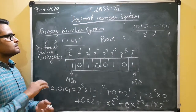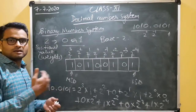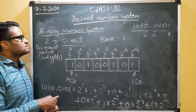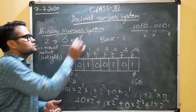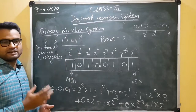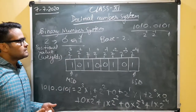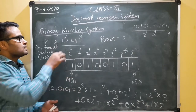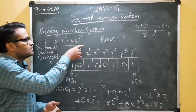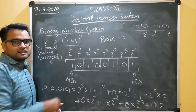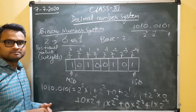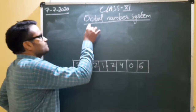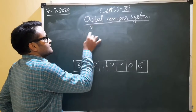Binary is the number system generally used by most computers because it is very easy to implement using only two digits: 0 or 1. Here 0 represents off and 1 represents on.